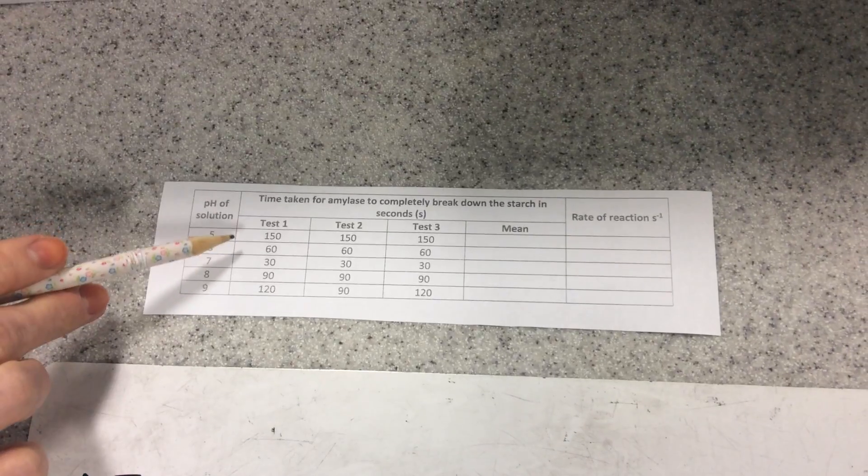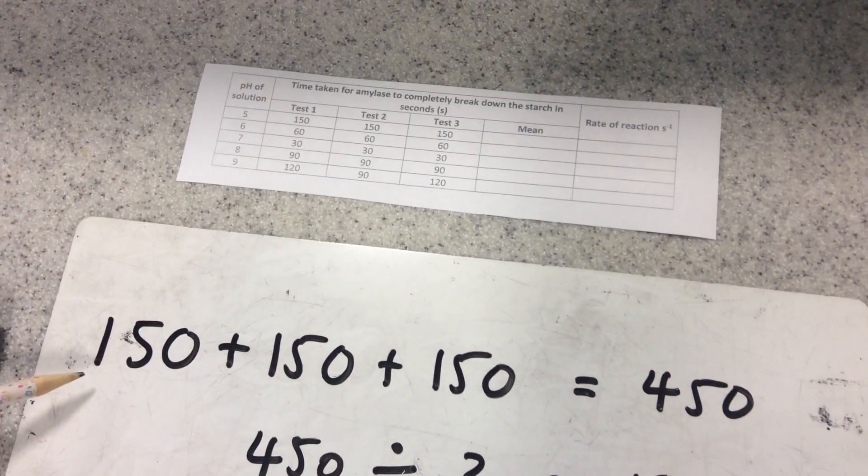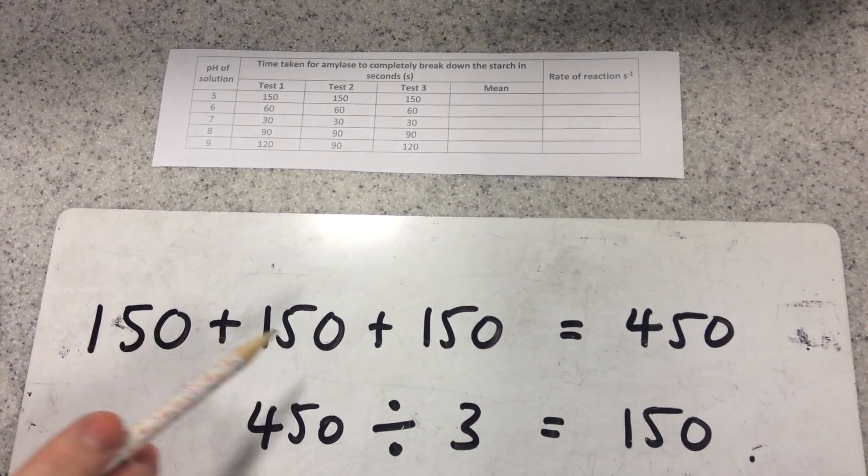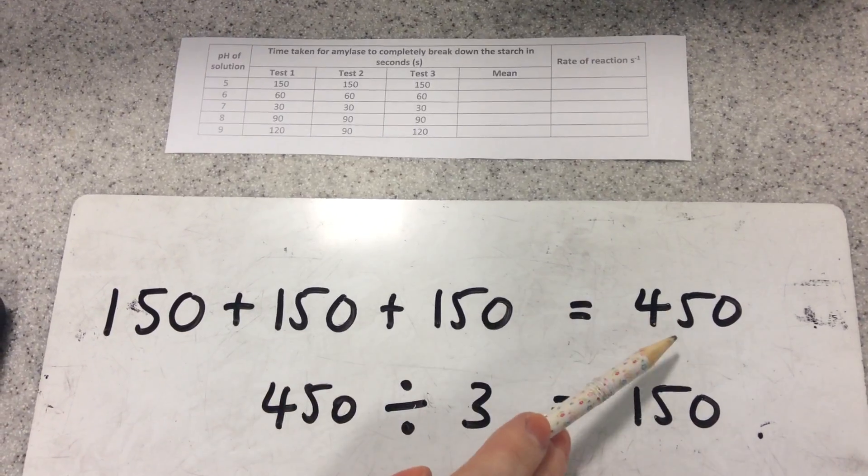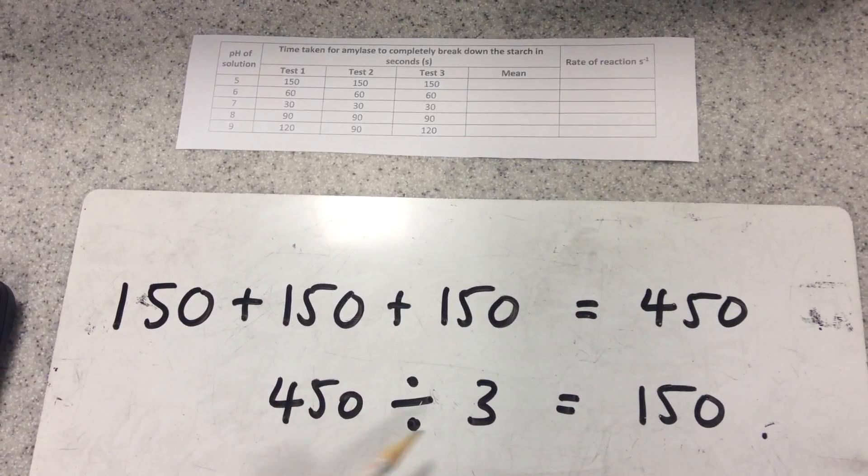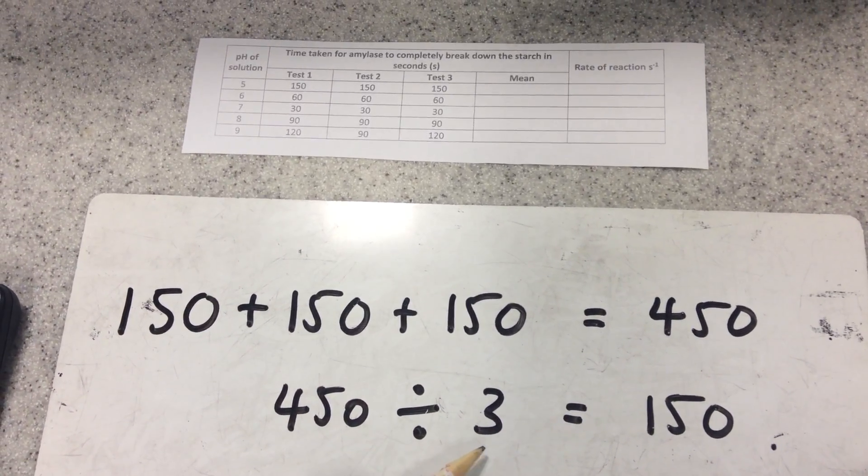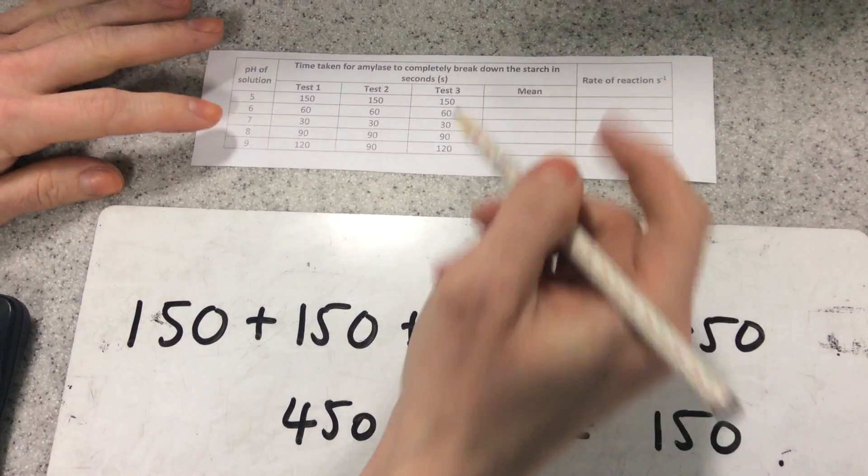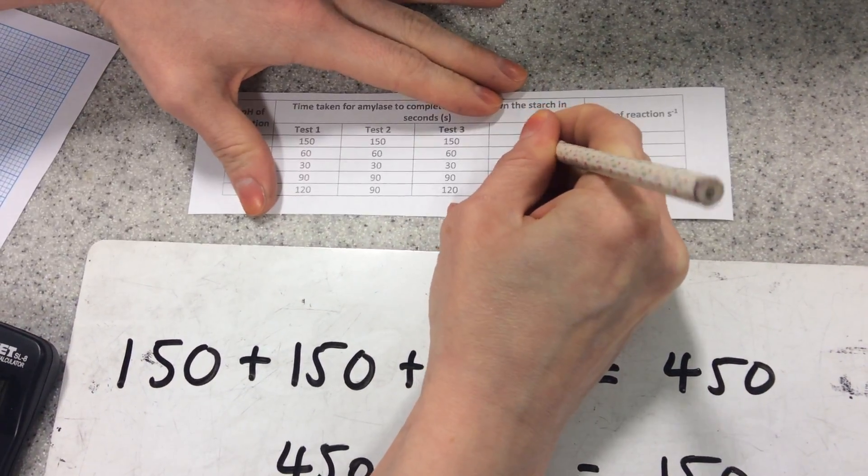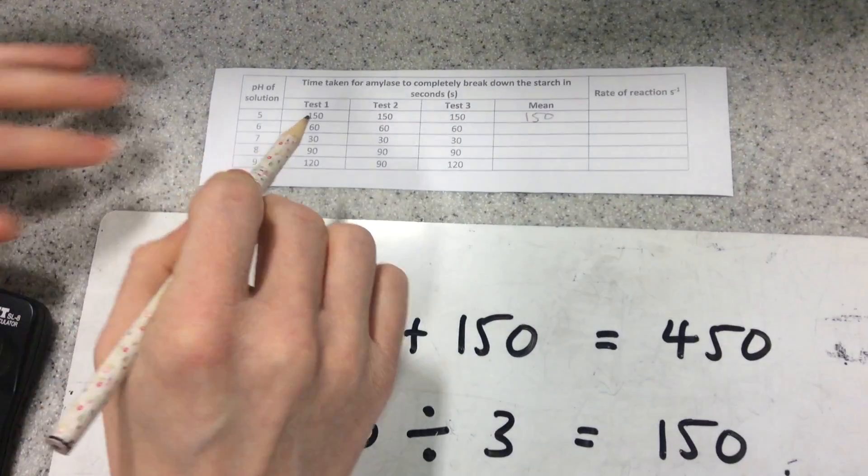I've done three tests, so to calculate the mean for pH 5, I've done 150, 150, 150 total, and then I've divided the total by three because I did it three times, and I've got 150. So I'll fill that in here, 150, and if I calculate the rest,